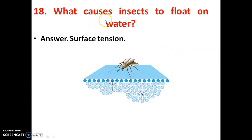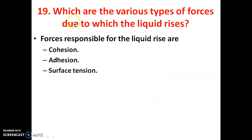What causes insects to float on water? It is due to surface tension — insects float on the surface of water due to surface tension. The forces due to which liquid rises include cohesive force, adhesive force, and surface tension.